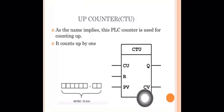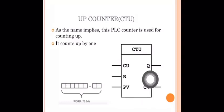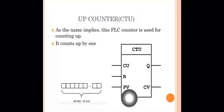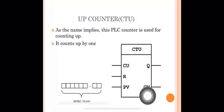The current counter value CV starts at 0 and increments: 0, 1, 2, 3, 4, 5... up to 25. When 25 products are produced, the output Q is set. The condition is: when CV is equal to or greater than PV, the output Q is set.